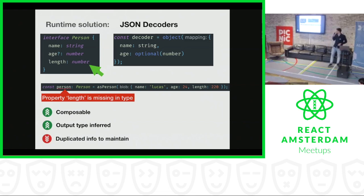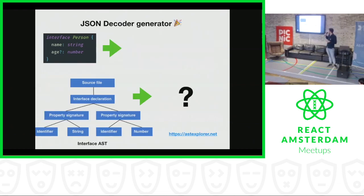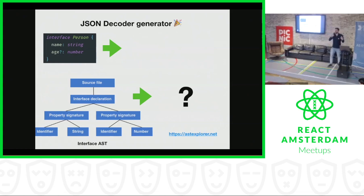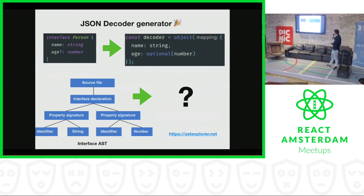So I came up with a solution for this, which is the JSON decoder generator. What it basically does is it takes your interface and creates a decoder for it.